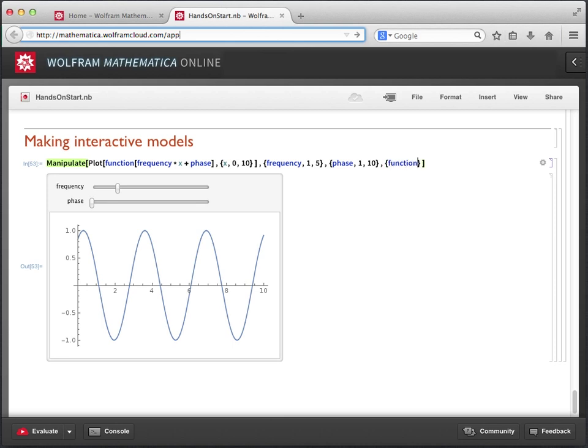This time, though, it doesn't make sense to give Mathematica Online numerical values if we are going to want to choose between different functions to graph. Then we should just give Mathematica Online a list of choices. We can do this by creating a sublist, which contains sine, cosine, and tangent as possible options.